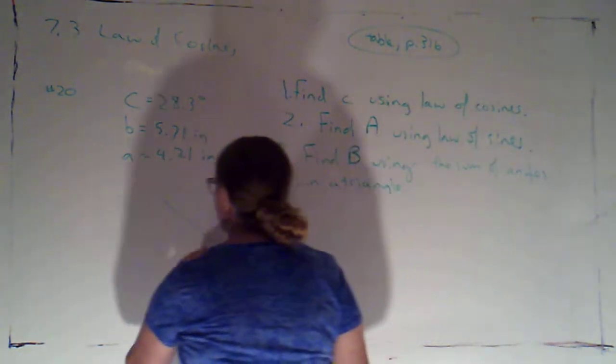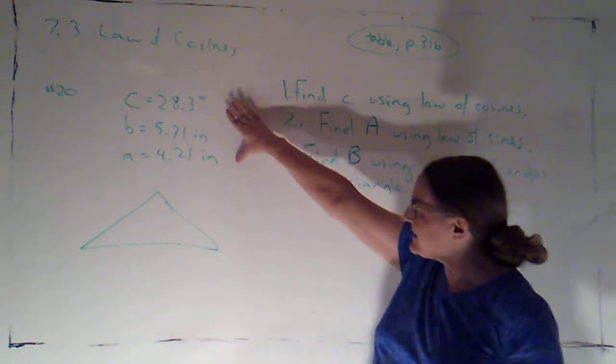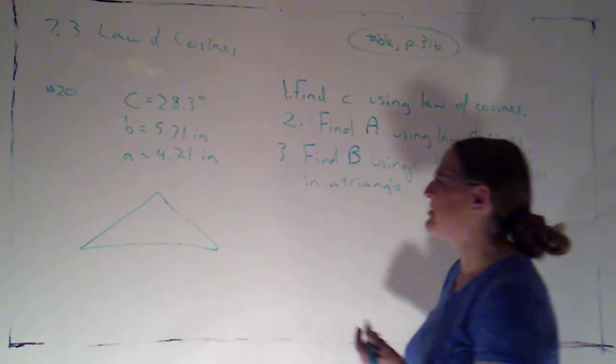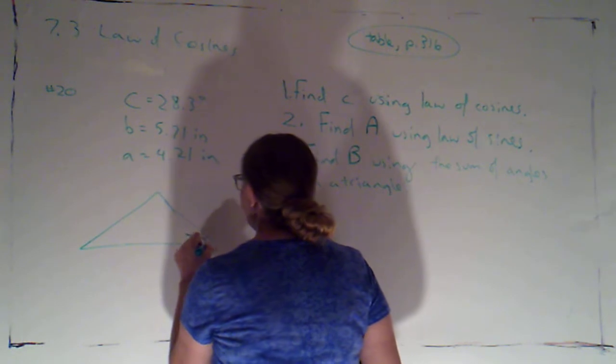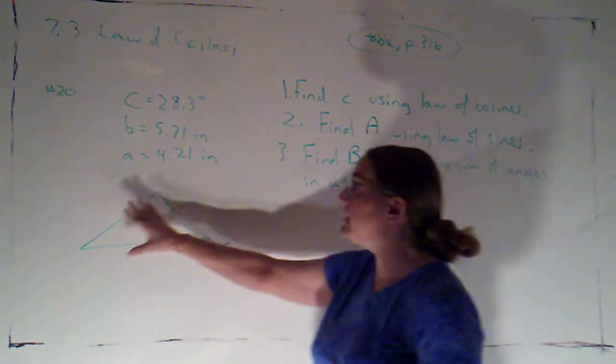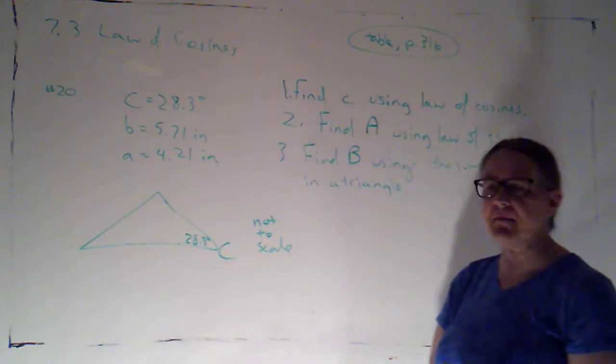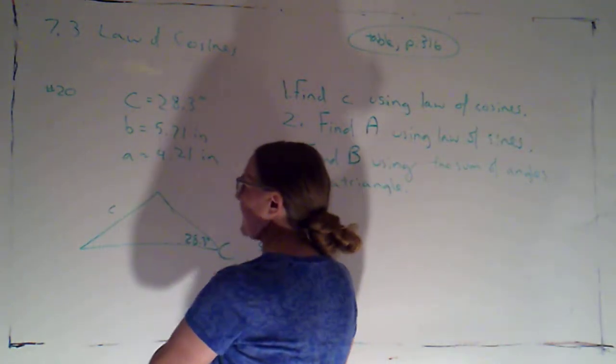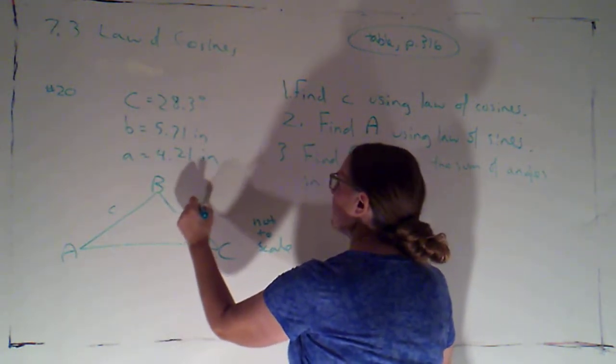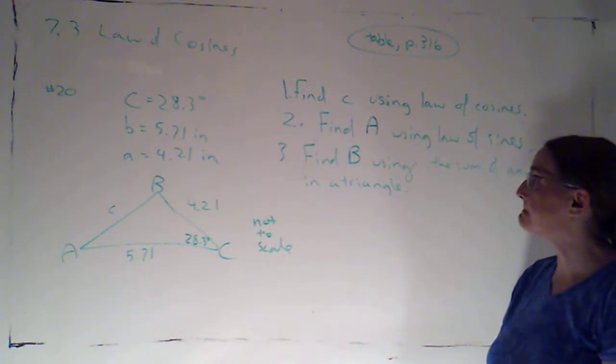Now, I like to have a picture, so I'm just going to draw a triangle. I don't know if this is what my triangle looks like, because when I only have this much information, I don't really have a good sense of how big the other angles are going to be. So 28.3 is a small angle, so I'll make it be a small one. But I really don't know, so I'm going to just label this as not to scale. I just kind of like to have a place to put my information. So this is angle C, this would be side C. I'll just make that A and B. So this would be side A, which is 4.21, and this would be side B, which is 5.71. Both of those are in inches.